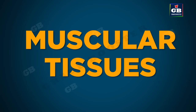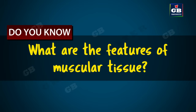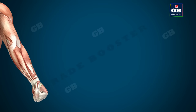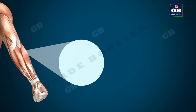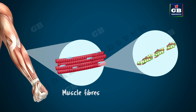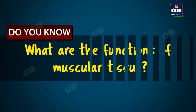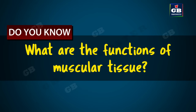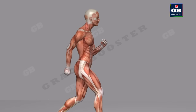Now let us learn about muscular tissue. The cells of muscular tissue are elongated and are also called muscle fibers. Muscle cells contain special proteins called contractile proteins. The muscles are able to contract and relax due to these proteins. Muscular tissue gives shape, support, and causes movement in different parts of our body.